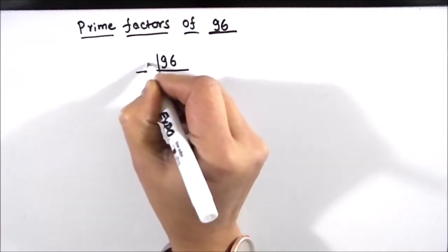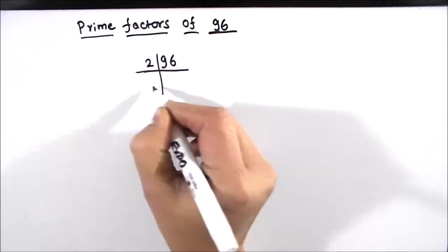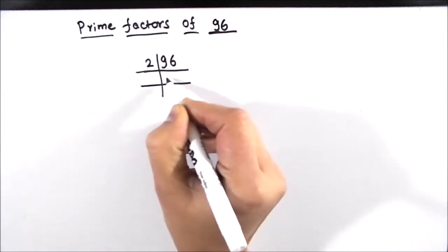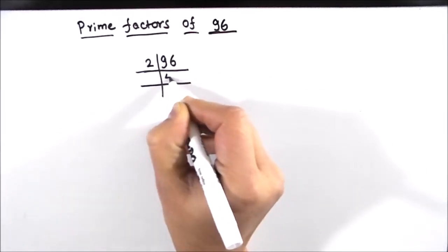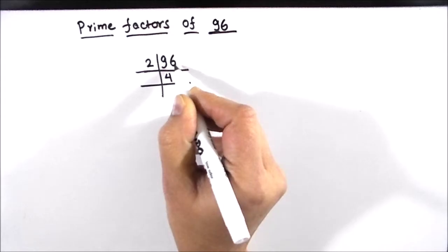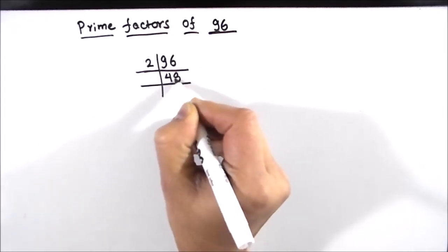96 is an even number, it is easily divisible by 2. 2 times 4 is 8, 1 will be remainder, then this becomes 16 — 2 times 8 is 16. So 96 divided by 2 gives 48.